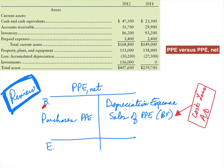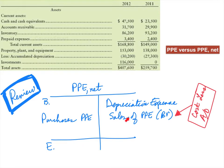You'll recall we had our beginning and ending balances, and if we purchased any equipment during the period that would increase our property, plant, and equipment net account. But because we have the word net on our account, that means something has been taken out — in this case, depreciation. So depreciation expense for the period would cause this account to go down. If we sold anything during the period we would decrease this account by the book value, which is the cost less its accumulated depreciation.